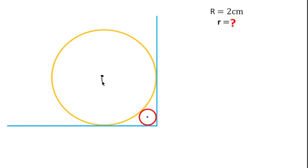Now if we draw a perpendicular from center to this line, then this is actually a square and according to the question this radius is 2 centimeters.